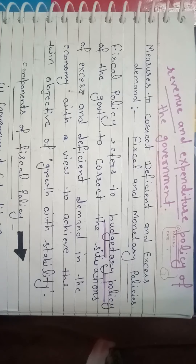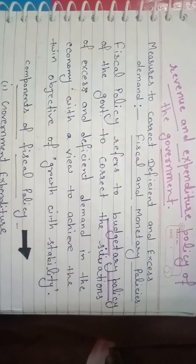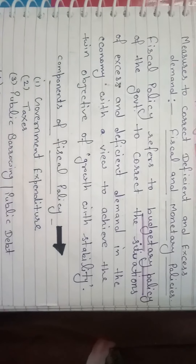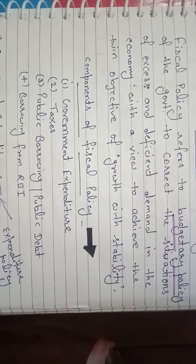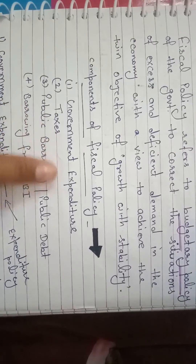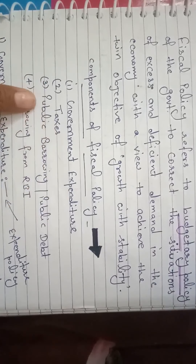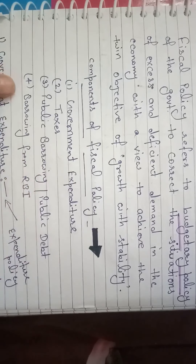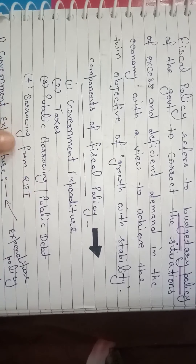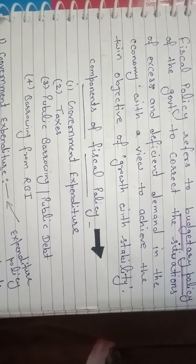Now let us understand the components of fiscal policy. The components of fiscal policy are: first, government expenditure; second, taxes; third, public borrowing or public debt; and fourth, borrowing from RBI. We will understand these measures one by one.